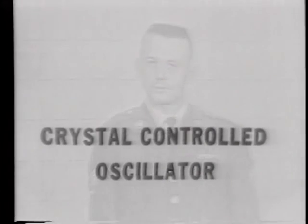An oscillator capable of producing such an output is the crystal controlled oscillator. We're not going to study the oscillator circuit in this lesson, but we will study the characteristics of the crystals used in such a circuit. The crystal will be used as the frequency determining device of the oscillator in much the same manner as a coil and capacitor was used in oscillator circuits previously covered.